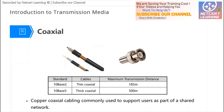The 10-base-5 we call thick coaxial. The thin coaxial can extend a distance of about 185 meters, and the thick coaxial can extend a longer distance of 500 meters. These two coaxial cables connect using different connectors — the thin coaxial uses BNC connectors, and the 10-base-5 uses tap-in connectors. Coaxial cables nowadays are seldom used; they were widely used about 20 or 30 years ago.